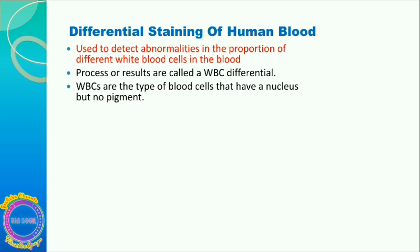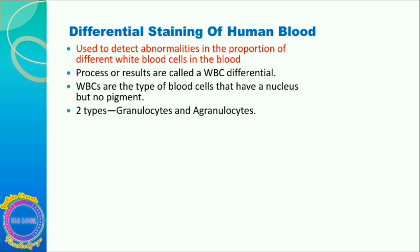WBCs are the type of blood cells that have a nucleus but no pigment. Two types of white blood cells are seen: granulocytes and agranulocytes. Whichever white blood cells have granules scattered around the cytoplasm are the granulocytes, and whichever do not have granules scattered within the cytoplasm are the agranulocytes.